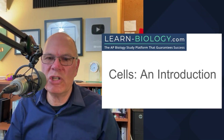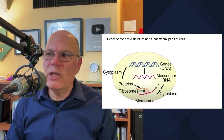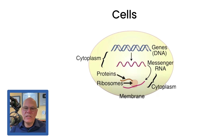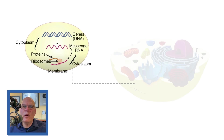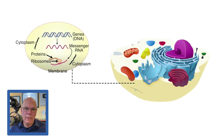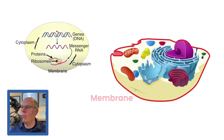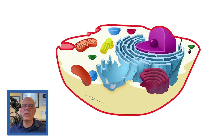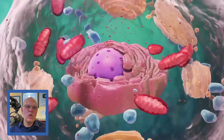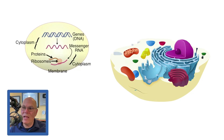Cells — a basic introduction. Let's talk about the structure and fundamental parts of cells. Cells are the basic units of life. They're the basic units of structure and function in living things. This is a very diagrammatic representation of how they're made up. All cells have a membrane on the outside. The membrane distinguishes the inside of the cell from the outside.